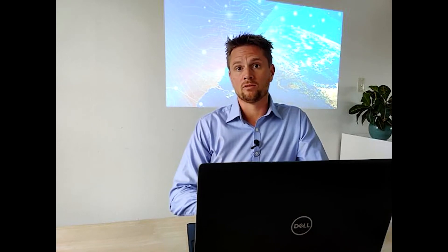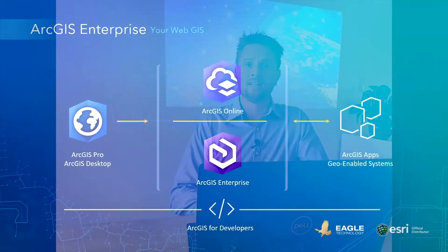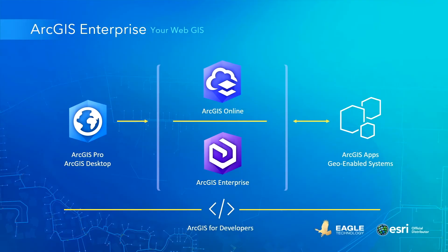RGS Enterprise is the backbone for running the Esri suite of applications and your own custom applications. It is tightly integrated with RGS Desktop and RGS Pro for mapping and authoring, and it seamlessly connects with RGS Online to share content between systems. It can be deployed in your local infrastructure, in the cloud, or a mixture of both.